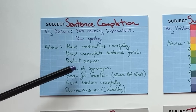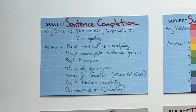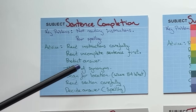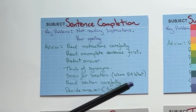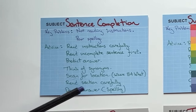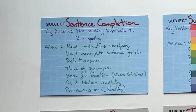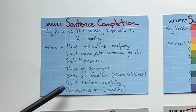For sentence completion, there might be synonyms, so think of different synonyms that might come up related to your predictions. Next, scan for the location of the correct answer. There's a key principle: where, before, what. During the reading test, look for where the answer is first, before thinking about what the correct answer is. Scan for the correct location first, then read that section carefully, decide the correct answer, and be very careful with your spelling.